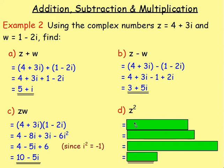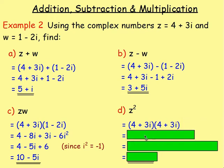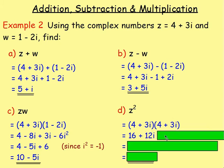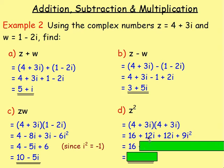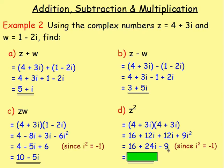For part d, Z²: (4 + 3i)² = (4 + 3i)(4 + 3i). Expanding: 4×4 = 16; 4×3i = +12i; 3i×4 = +12i; 3i×3i = +9i². Replace i² with −1: 9×(−1) = −9. Real parts: 16 − 9 = 7. Imaginary parts: 12i + 12i = 24i. Answer: 7 + 24i.